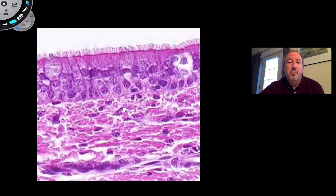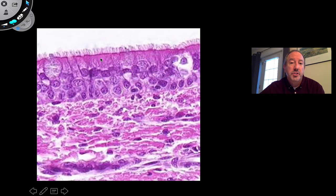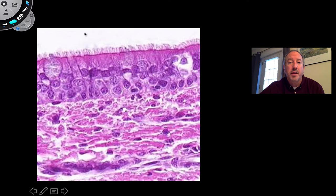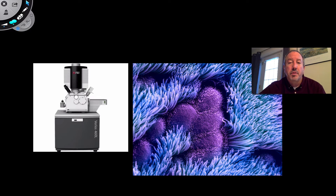For example, you may recognize this grouping of cells found in your trachea. This is called pseudostratified columnar ciliated epithelium — it looks stratified but isn't. The cells are column-shaped, and the cilia are protein-like extensions that move and help capture dust particles in the trachea. Microscopes, especially the light microscope, are really important in anatomy.